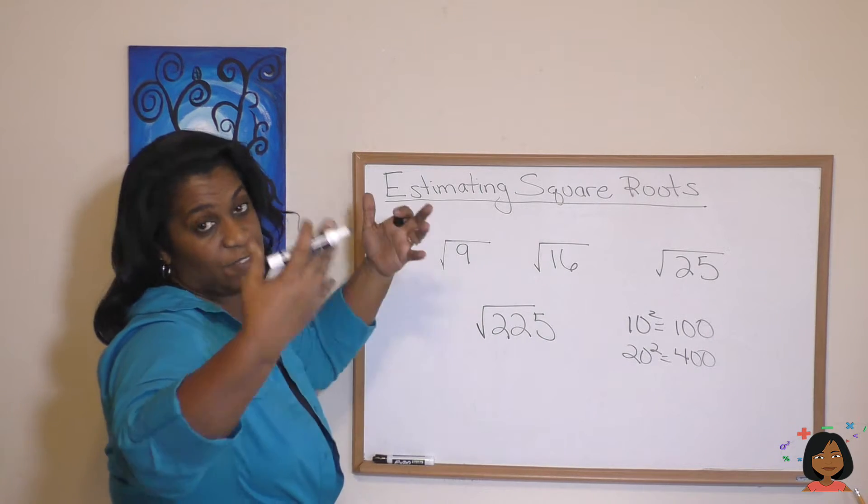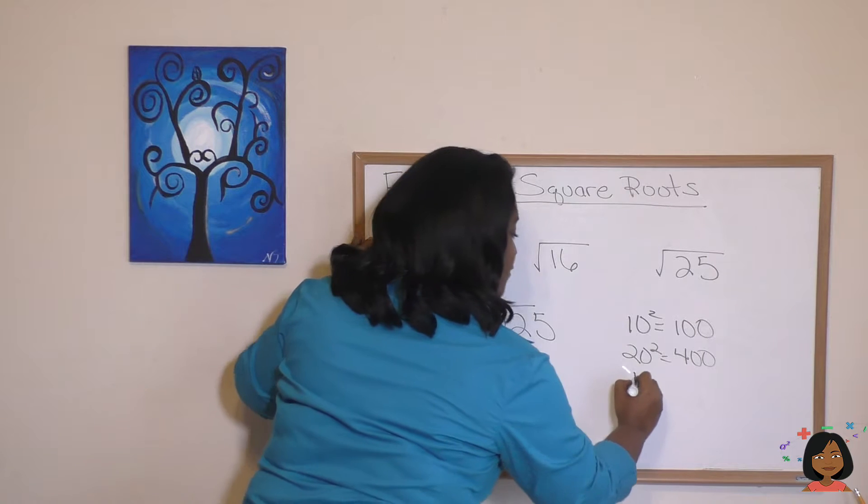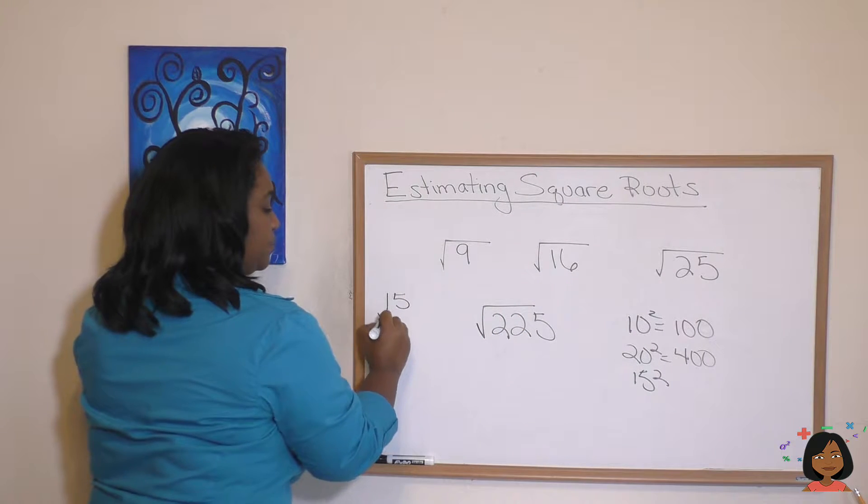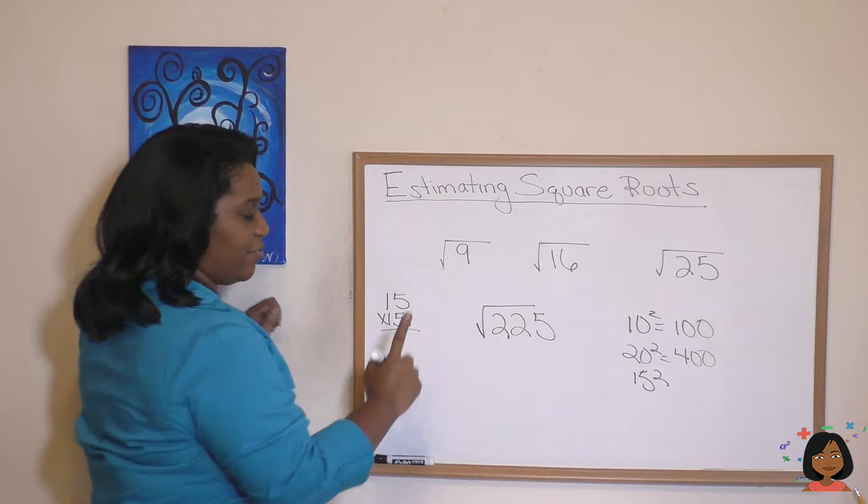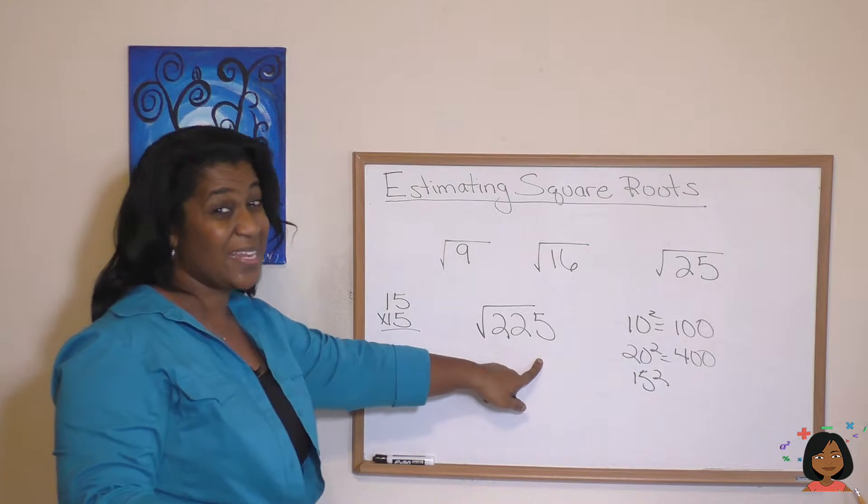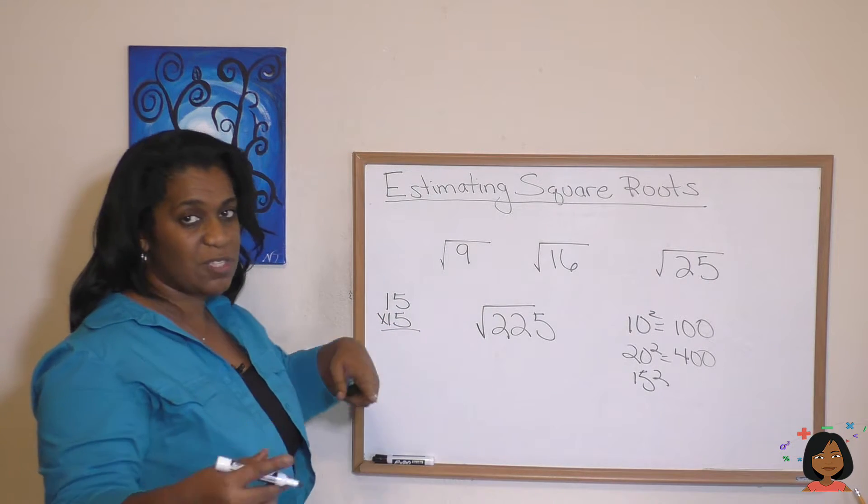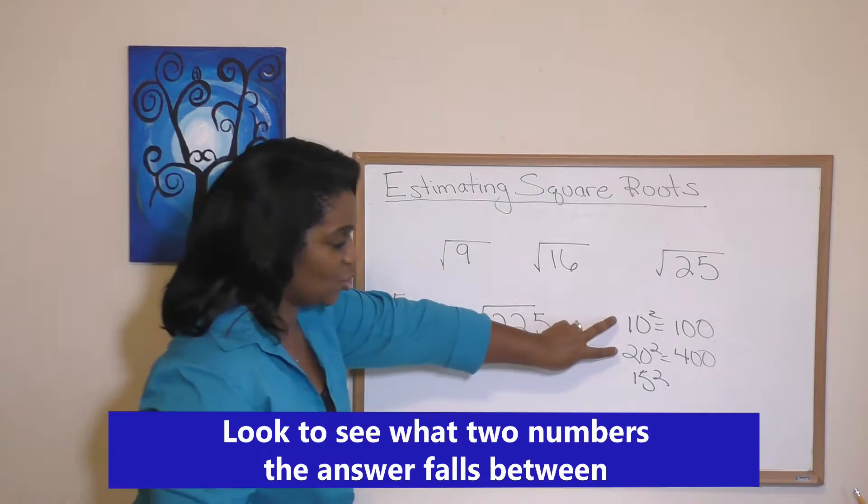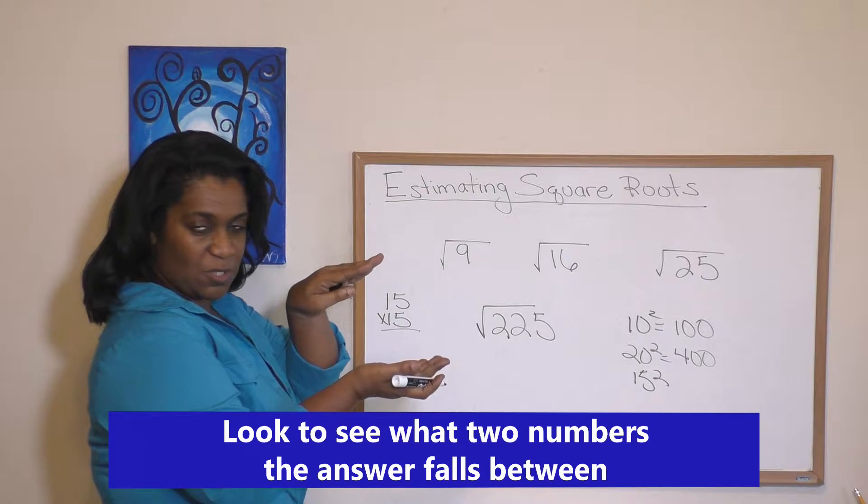So why don't we try shooting it in the middle? 15 times 15, so 15 squared. Let's do our math over to the side. And here's the other thing, we know our answer is going to end in a 5. So as we're multiplying, we have to think what's going to give us an answer that ends in 5. So the first thing is you look to see what two numbers it's between. Second thing, what's going to give me the number I want to end in? And 15 might do it.